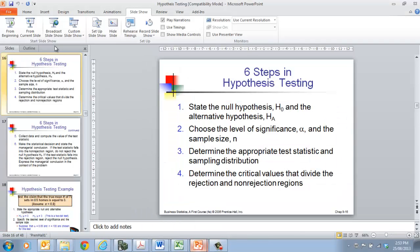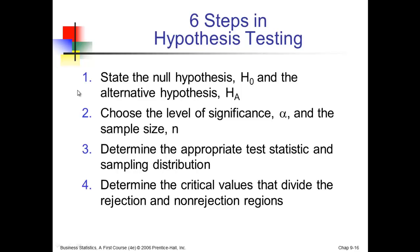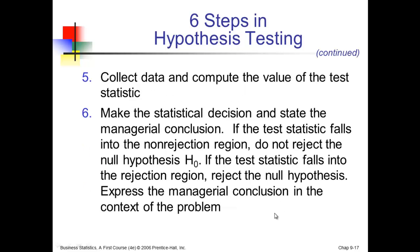So here are really the six key steps when you look at hypothesis testing. You're stating the null hypothesis and the alternative. You're choosing your significance level and your sample size. You're determining the appropriate test statistic. You're determining what the critical values are that divide your rejection region and your non-rejection region. We're collecting data and computing the values of the test statistic. And then once we've got it, we're making a conclusion about whether we'll accept or reject that null hypothesis.